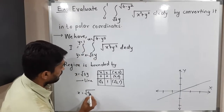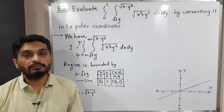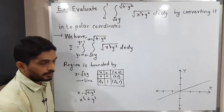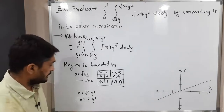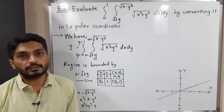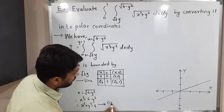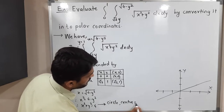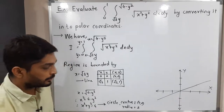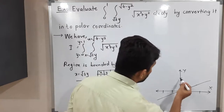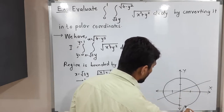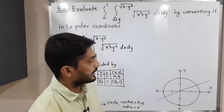The second curve is x = √(4 − y²). To remove the square root, we square both sides: x² = 4 − y², which gives x² + y² = 4. This is the standard equation of a circle with center (0, 0) and radius 2, since 4 is the square of 2. We draw a rough sketch of this circle.